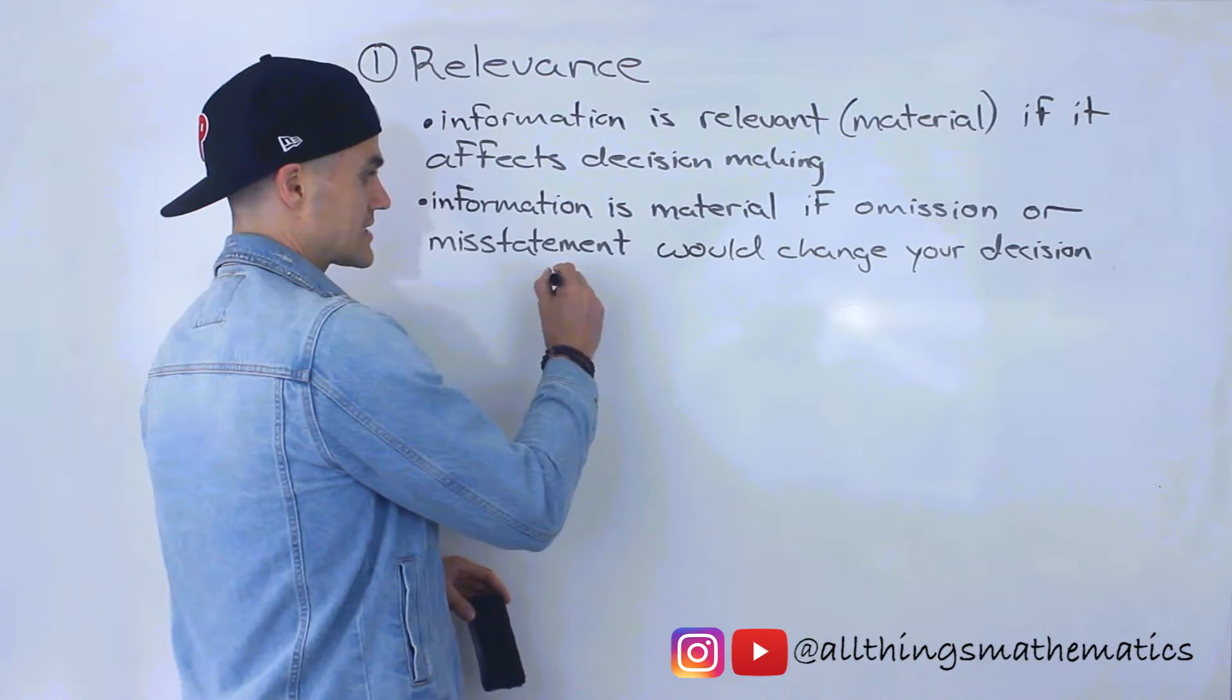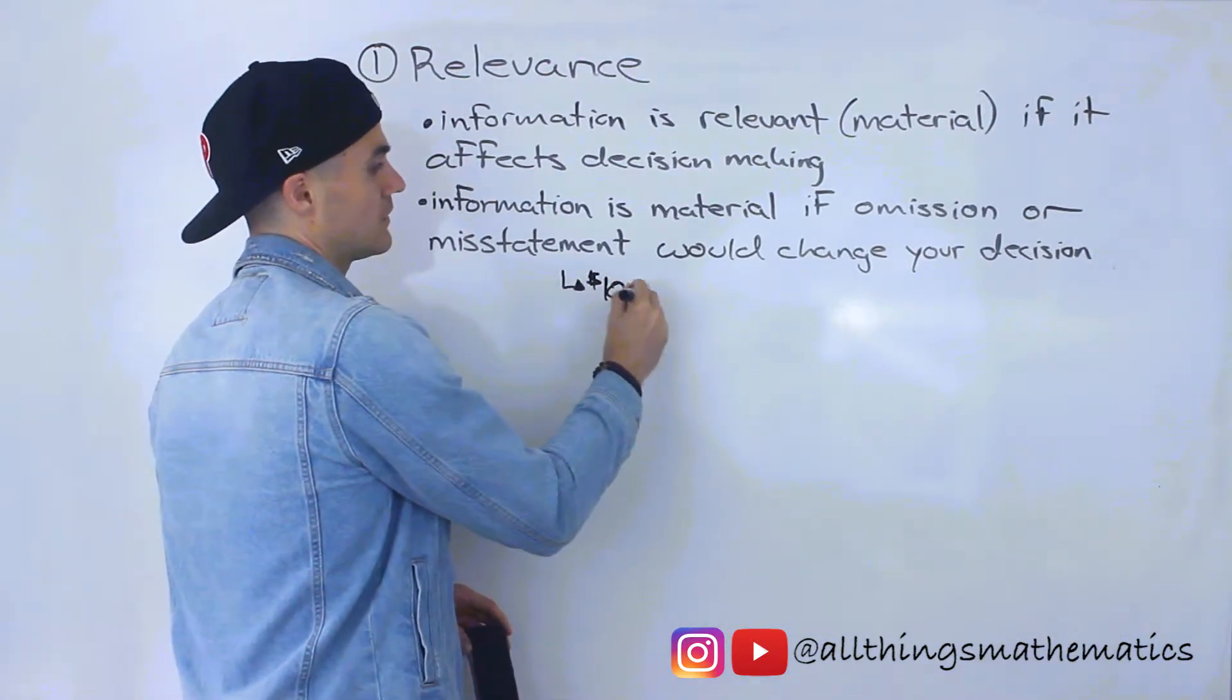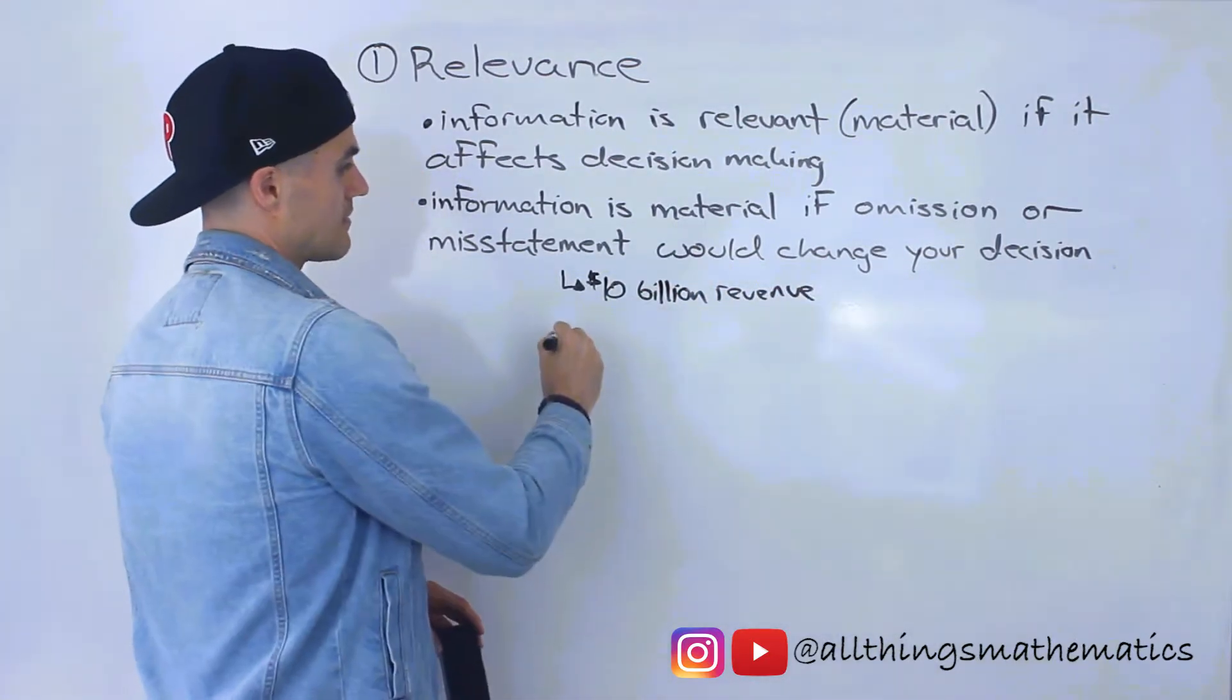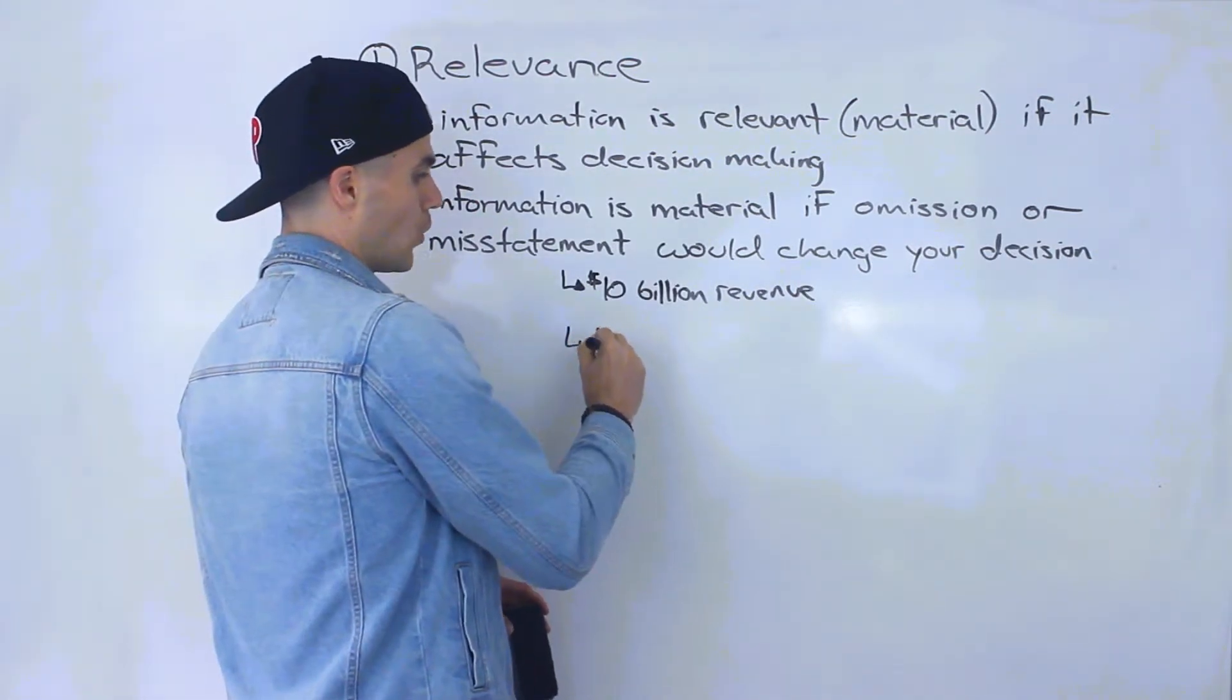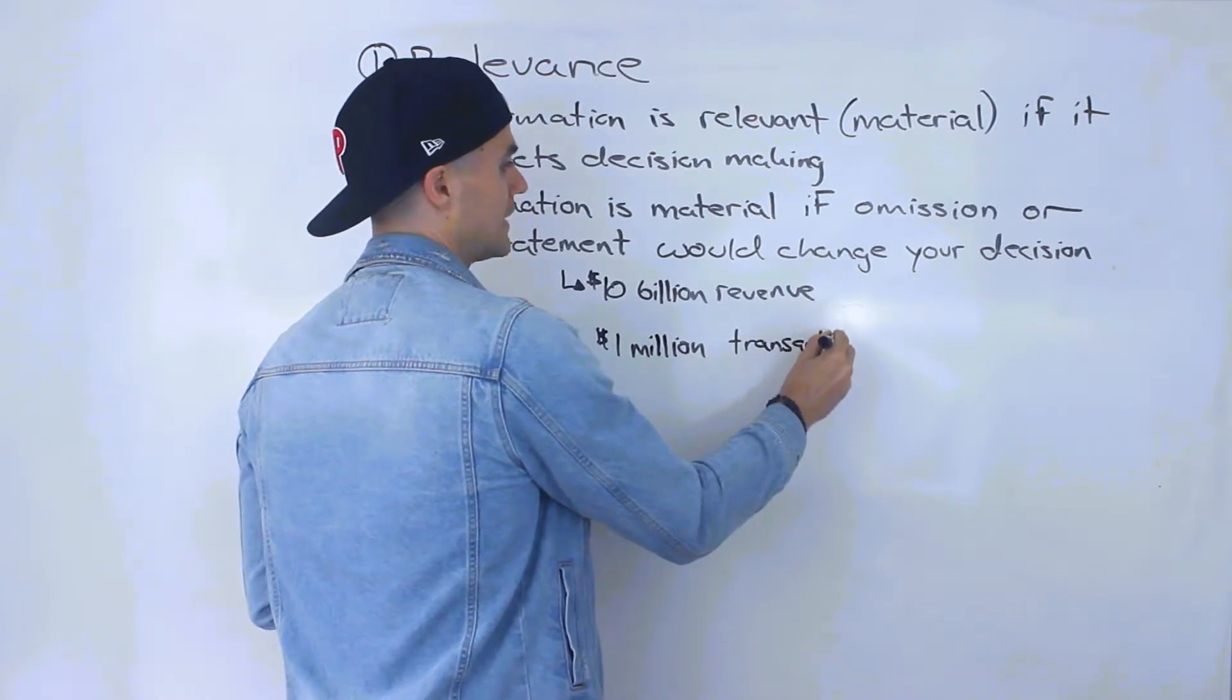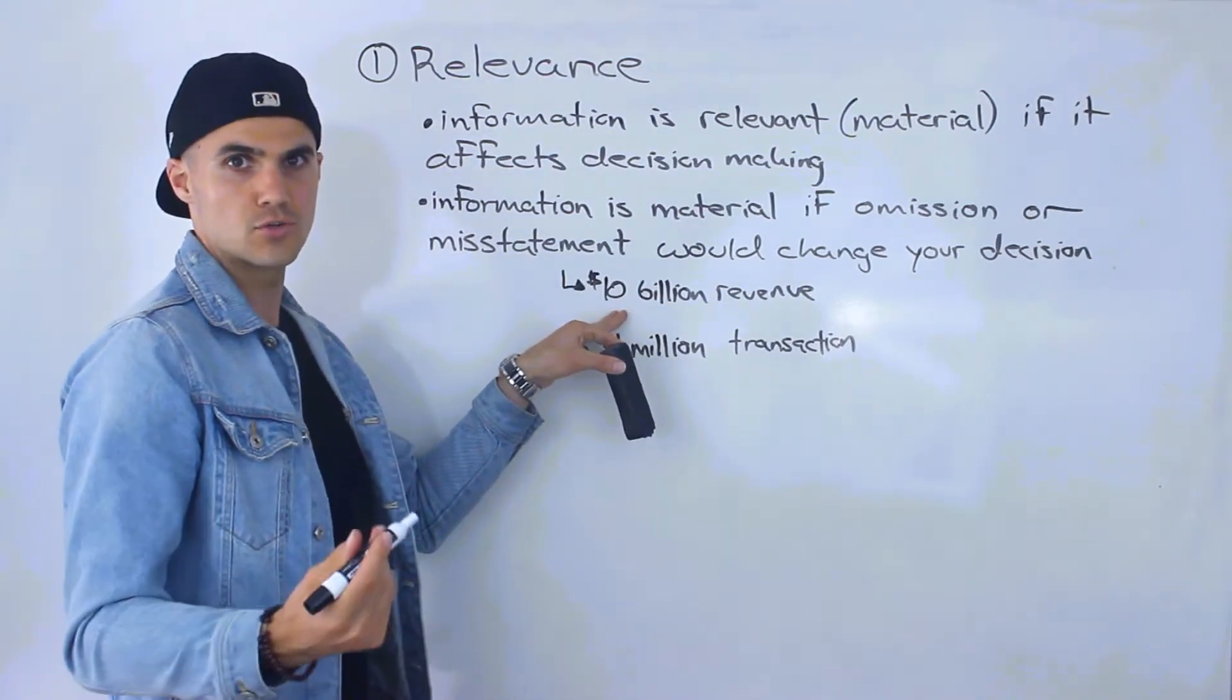So for example, let's say that you're an investor and you're thinking about investing in a company that has $10 billion worth of revenue. And let's say that there is a misstatement of a $1 million transaction. And this company has $10 billion worth of revenue.